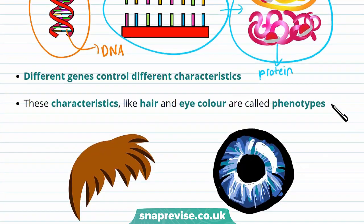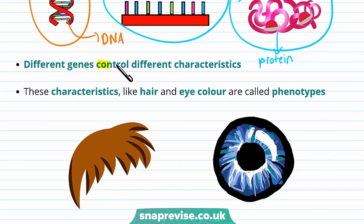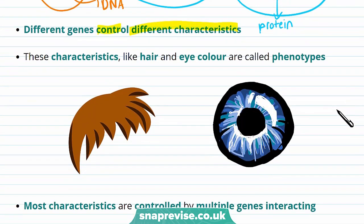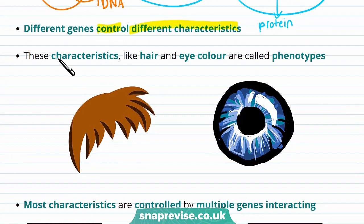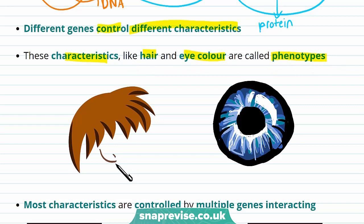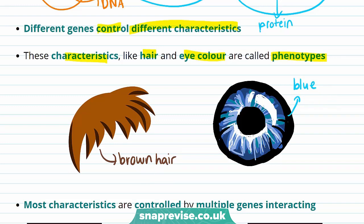Each different gene in our body controls different characteristics. These characteristics, like hair and eye colour, are called phenotypes. For instance, having brown hair would be a phenotype. Having blue eyes would also be another phenotype.